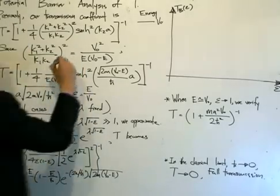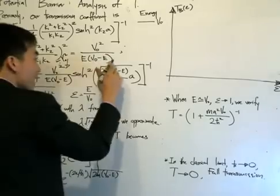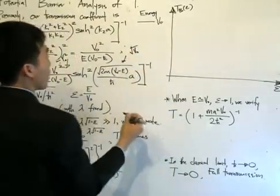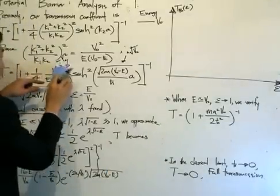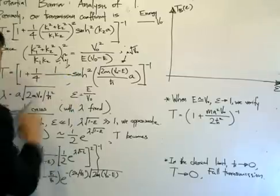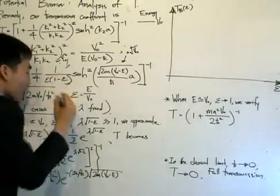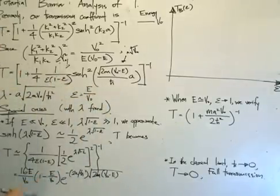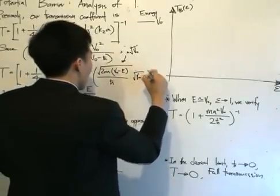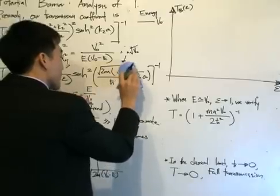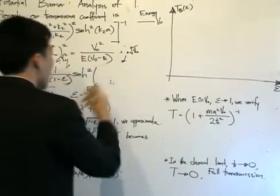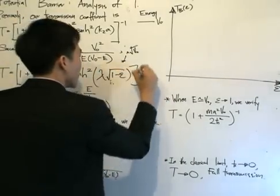Now what I'm going to do is divide top and bottom by V0 squared. For the argument inside the hyperbolic sine squared, I'm going to multiply top and bottom by the square root of V0. When we do that, the V0 squared term becomes 1, and for the denominator I can distribute the V0 squared between E and V0. Ultimately what I'm left with is ε times (1 minus ε), where ε equals E divided by V0. And over here I would have a square root of V0 outside, giving me the factor of (1 minus ε). I then simplify this whole thing and write it as λ times the square root of (1 minus ε), to the minus one.